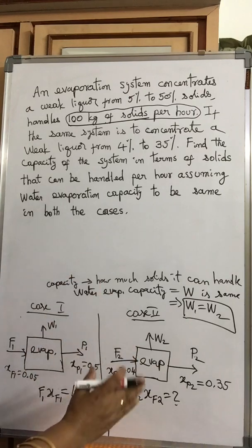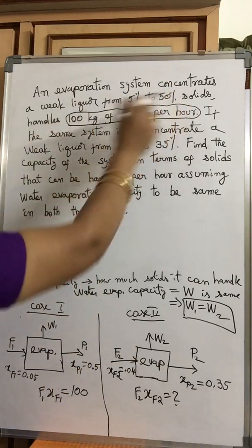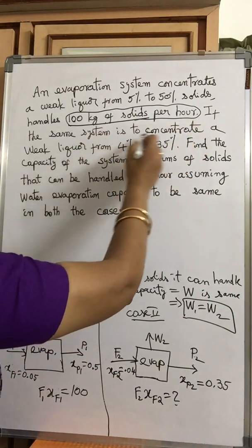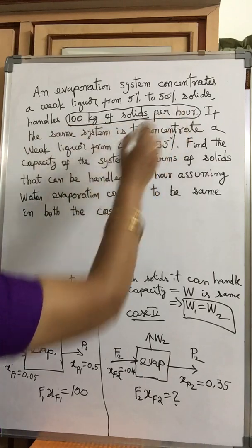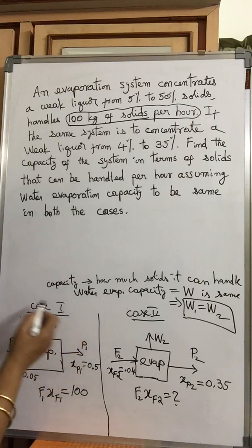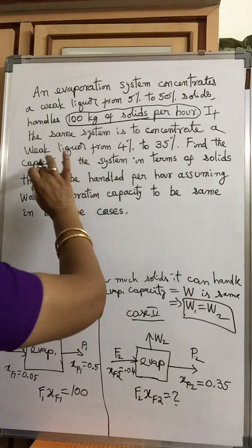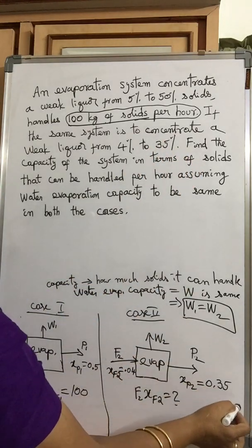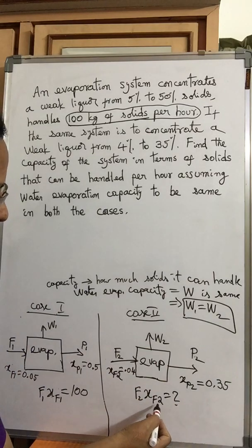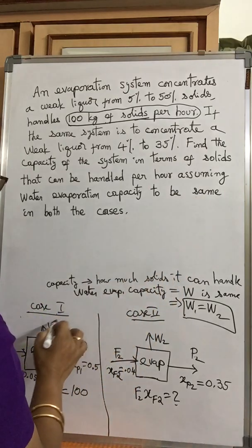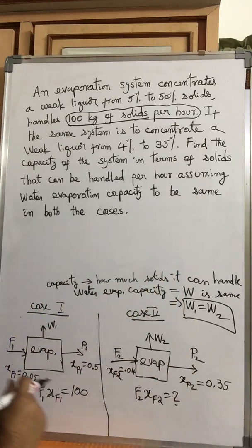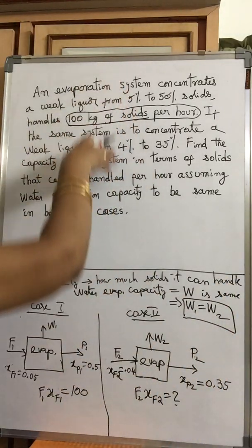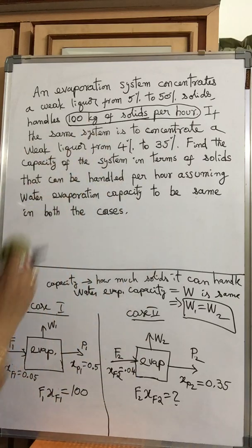To summarize the problem: an evaporation system concentrates weak liquor from 5% to 50% solids, handling 100 kg of solids per hour — that means F1 × XF1 = 100. The same system, if concentrating from 4% to 35%, requires finding F2 × XF2. Water evaporation capacity W1 = W2 is the same. Once you understand the problem from this diagram, you can write all the steps.